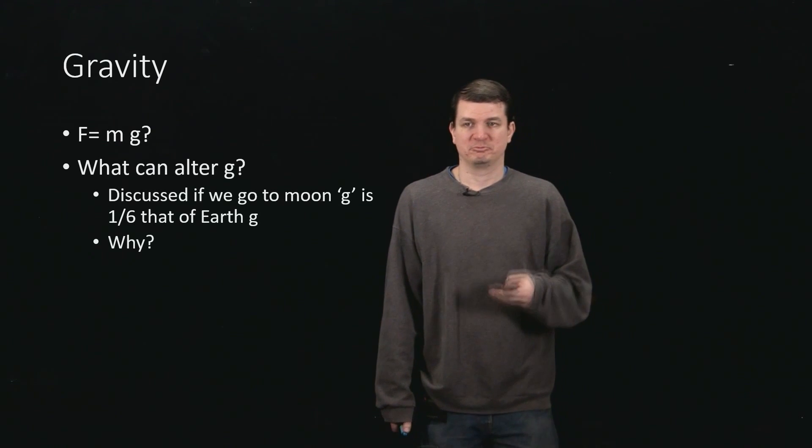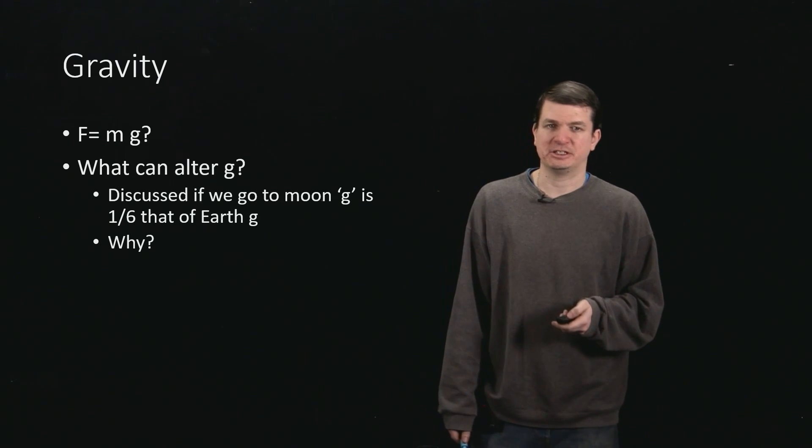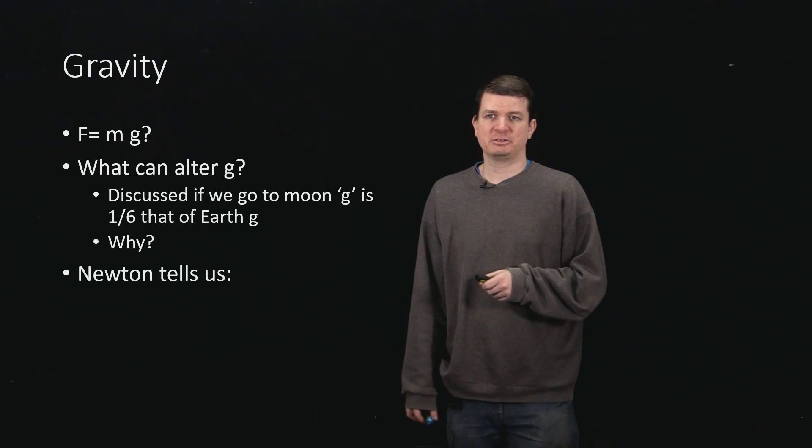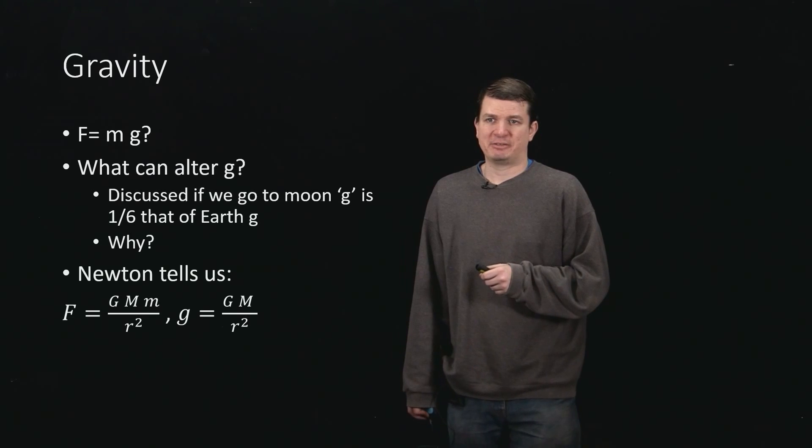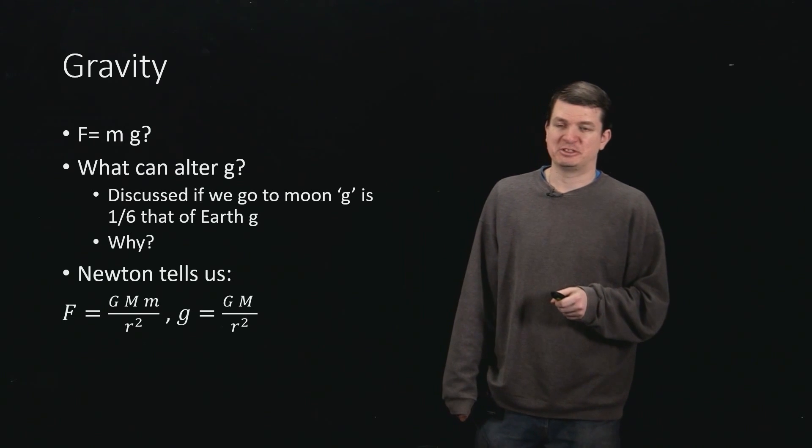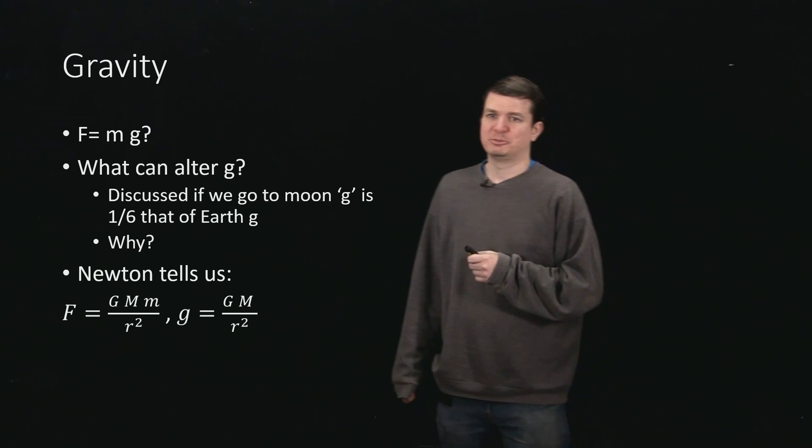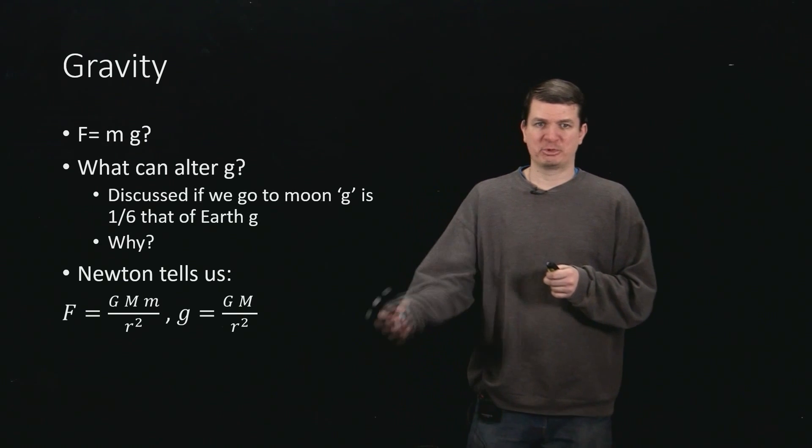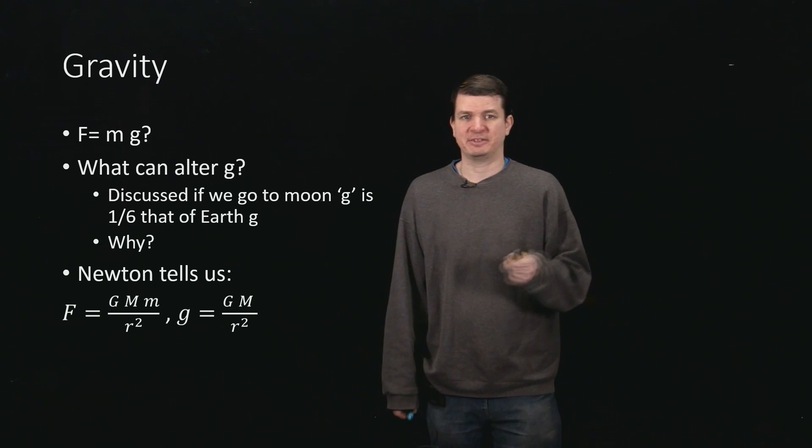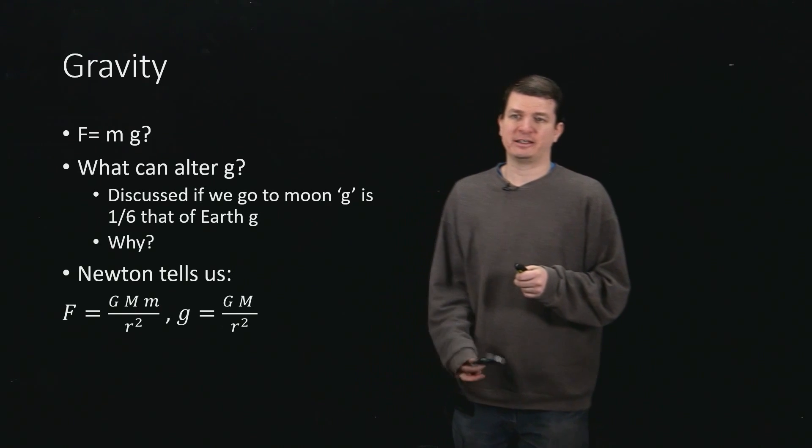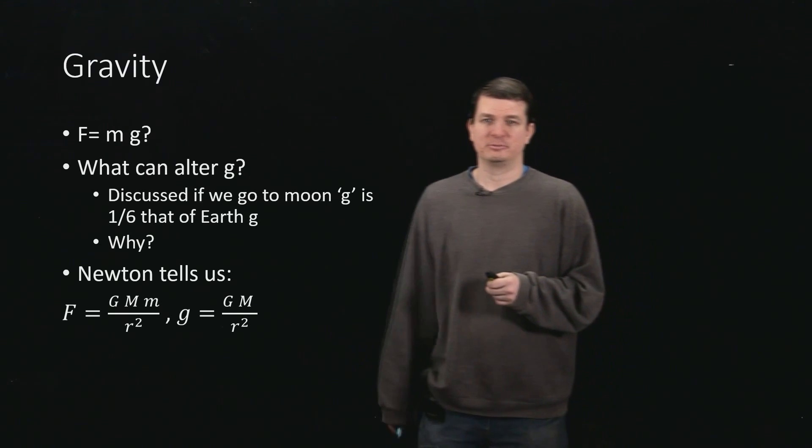And really, why are things changing g? So Newton tells us the answer to this by writing down gravity not as just m times g, but a much more general form, a new constant capital G, times the mass of one object, times the mass of the other, divided by the separation squared.